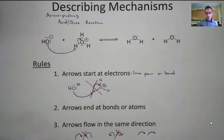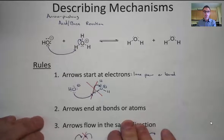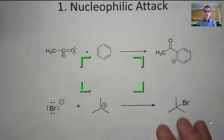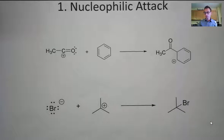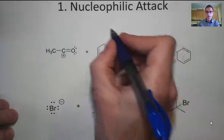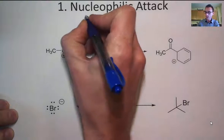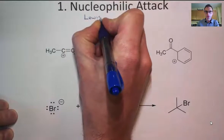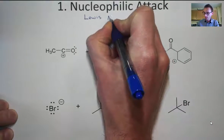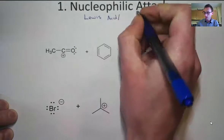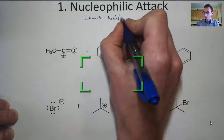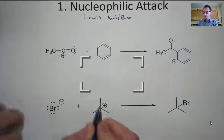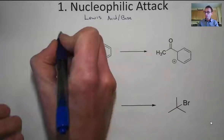The book talks about four different patterns for recognizing arrow pushing — four different fundamental types of mechanisms. Every step in a mechanism, or every mechanism as a whole, you're going to be able to relate to one of these different types of patterns. The first is called a nucleophilic attack, and it's very similar to what we've seen with acids and bases.